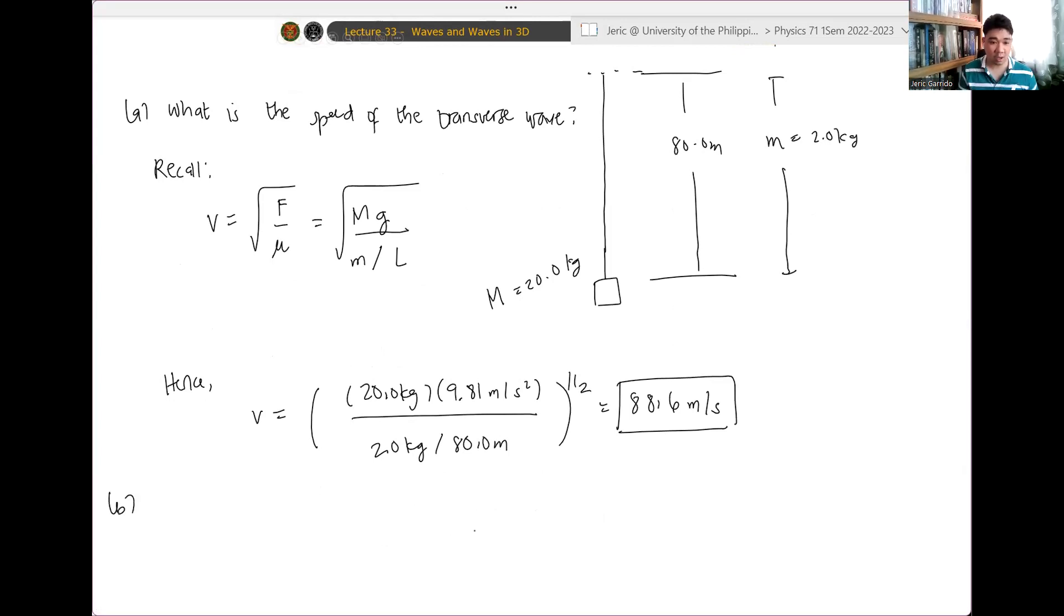Okay, for letter B, remember, you have, syempre, nag-disturb ka, so mayang travel na wave dyan. Ang tanong ngayon, gaano karaming cycles yung magta-traverse dyan sa rope na yan? Gaano karaming cycles? So, how many cycles? If the frequency is F equals 2.00 hertz.